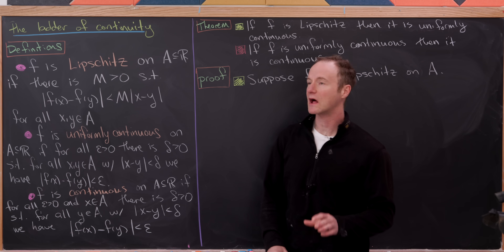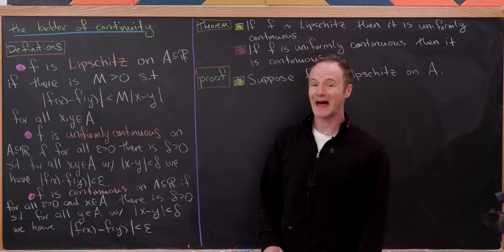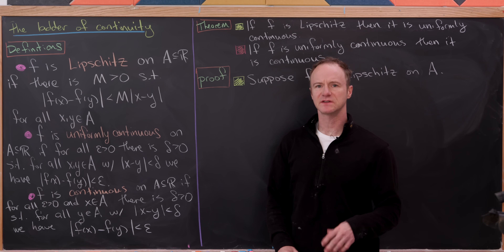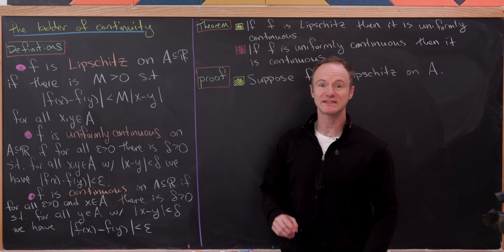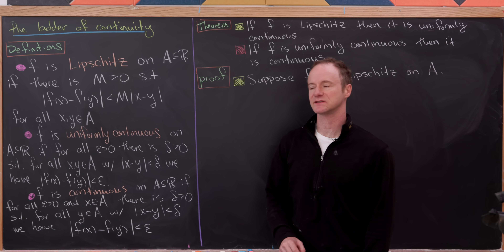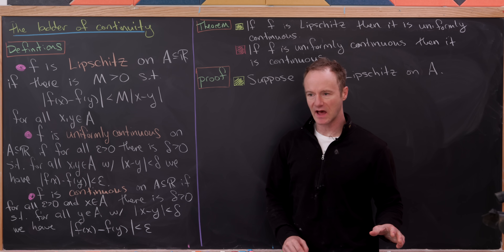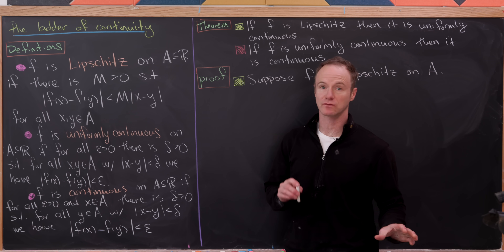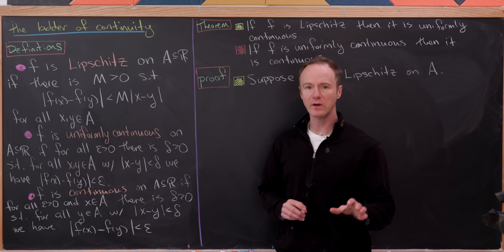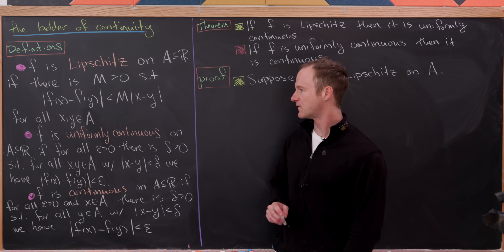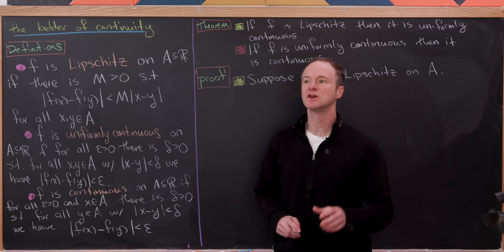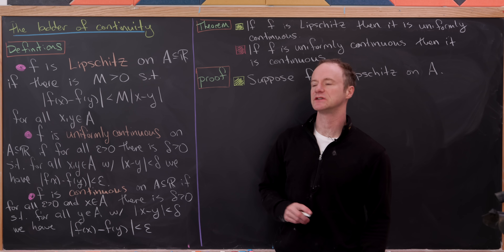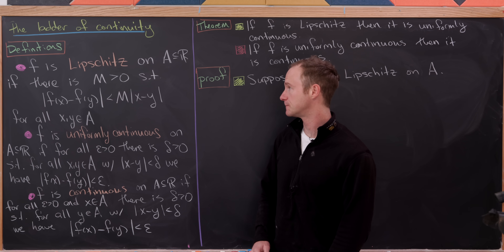Today we're going to look at part of what I'll call the ladder of continuity. This is going to involve some notions that you would learn in a basic real analysis class, as well as some examples based around those ideas. Let's look at the following three definitions, which are three types of continuity.